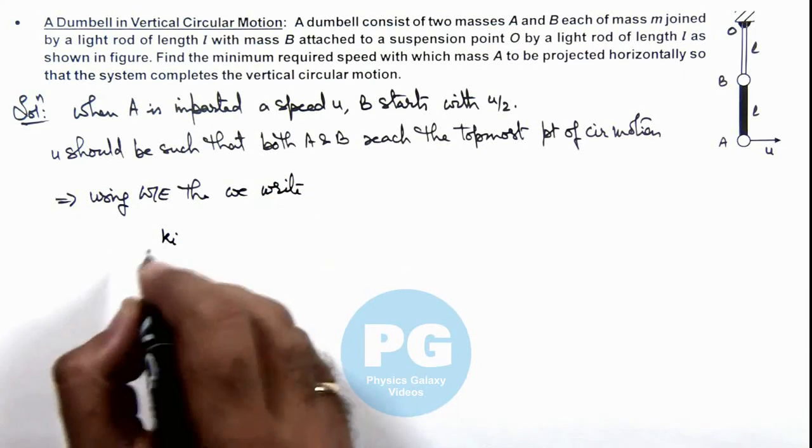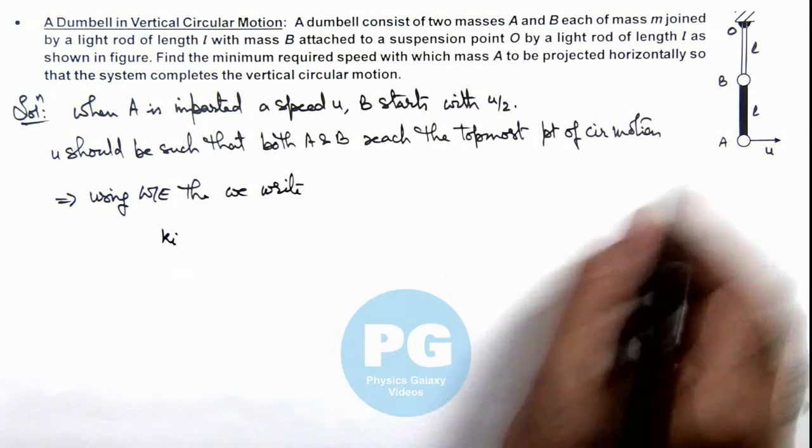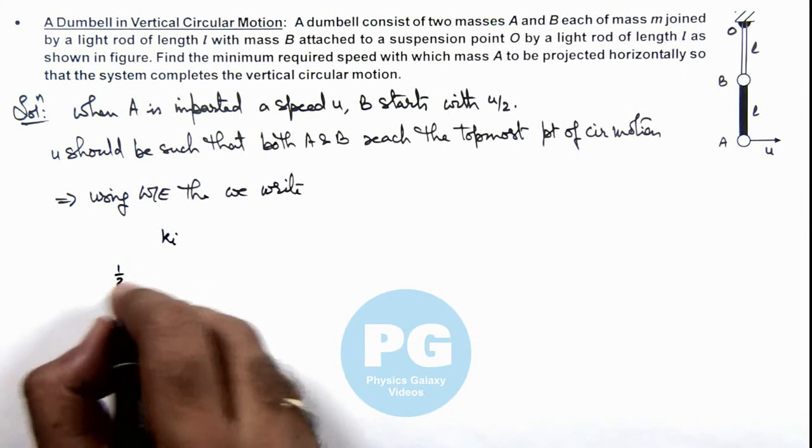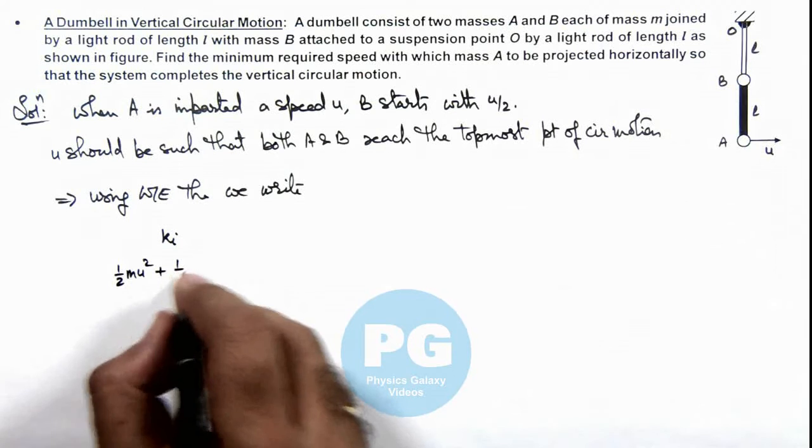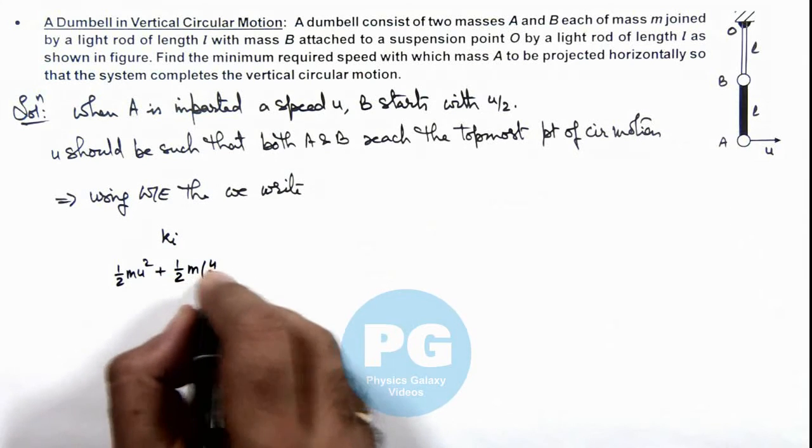Initial kinetic energy of this system would be, for bob A it is (1/2)mu², plus for bob B it is (1/2)m(u/2)².